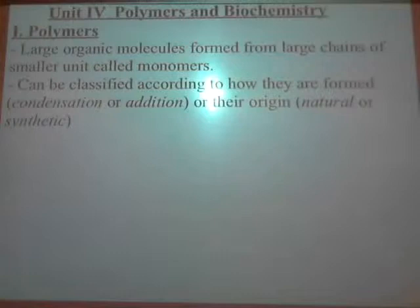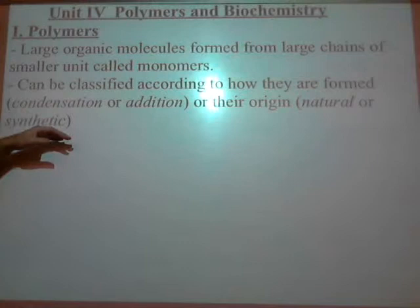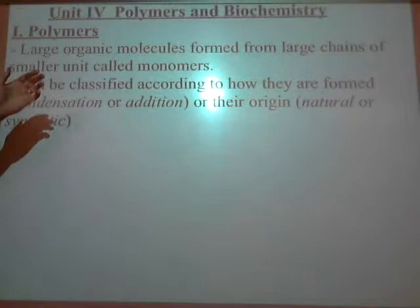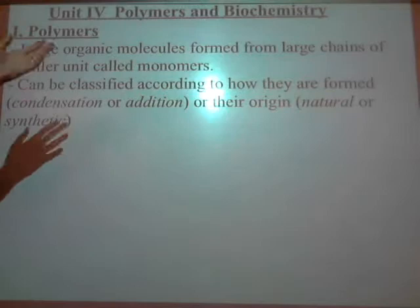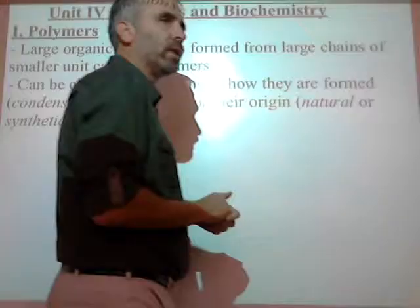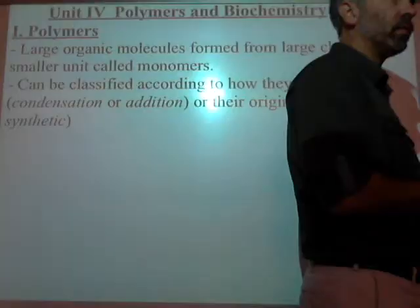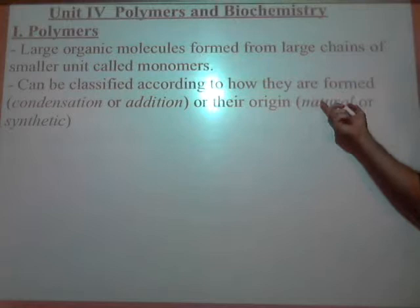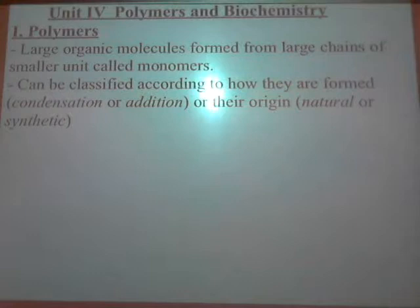Natural versus synthetic and condensation versus addition are separate ways to categorize polymers, but they overlap — they're not mutually exclusive. For example, a condensation reaction can be natural, or some condensation reactions are synthetic. Some addition reactions are synthetic; some are natural. Within each categorization, they are mutually exclusive: natural cannot be synthetic, and condensation and addition are mutually exclusive within that axis.